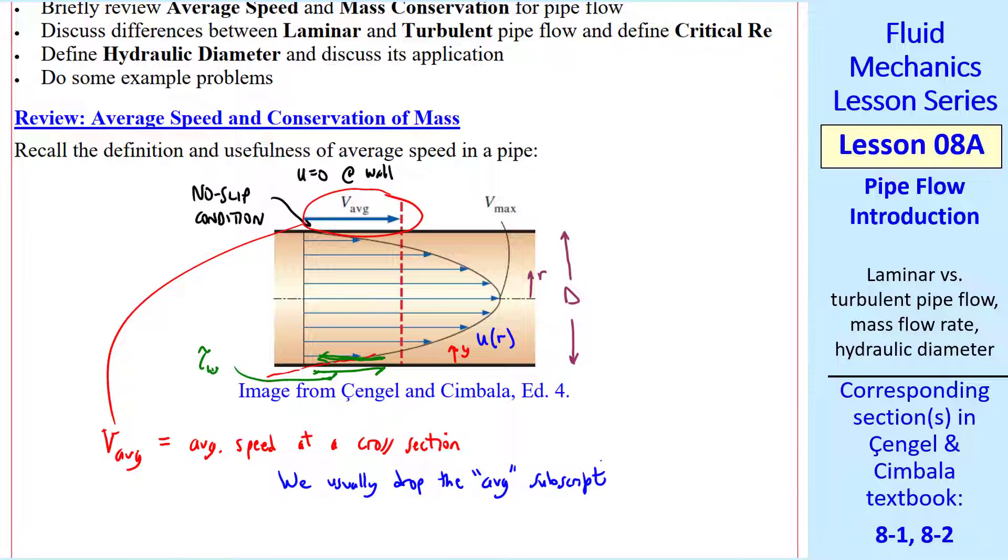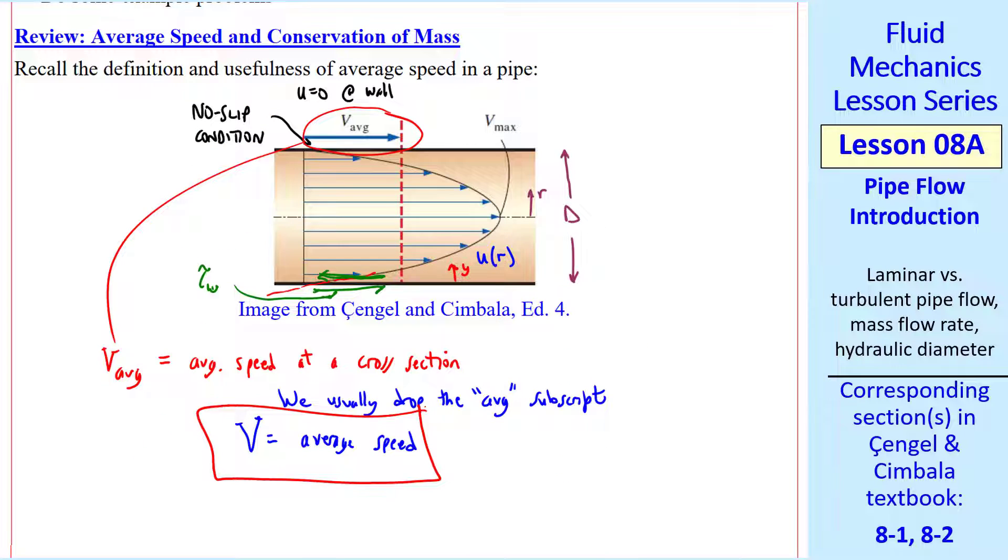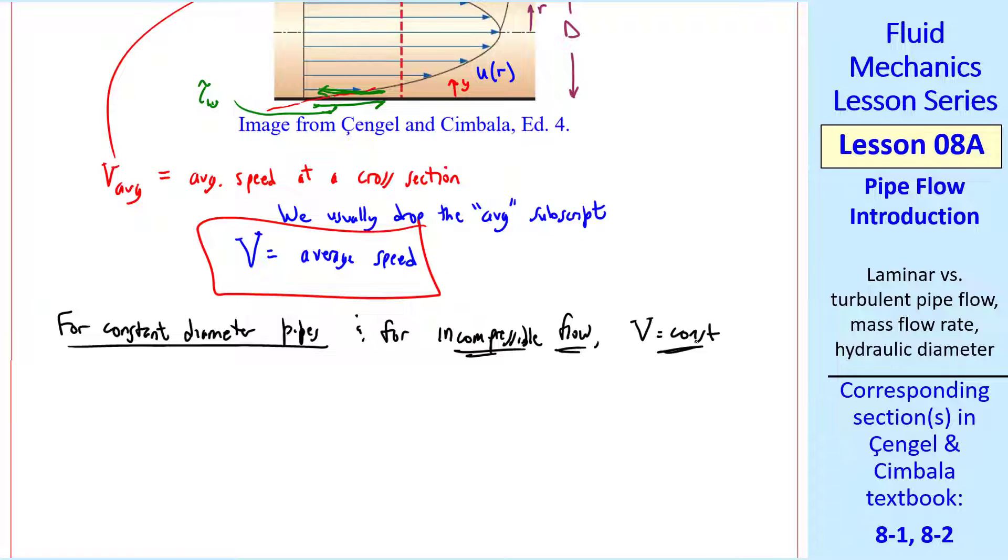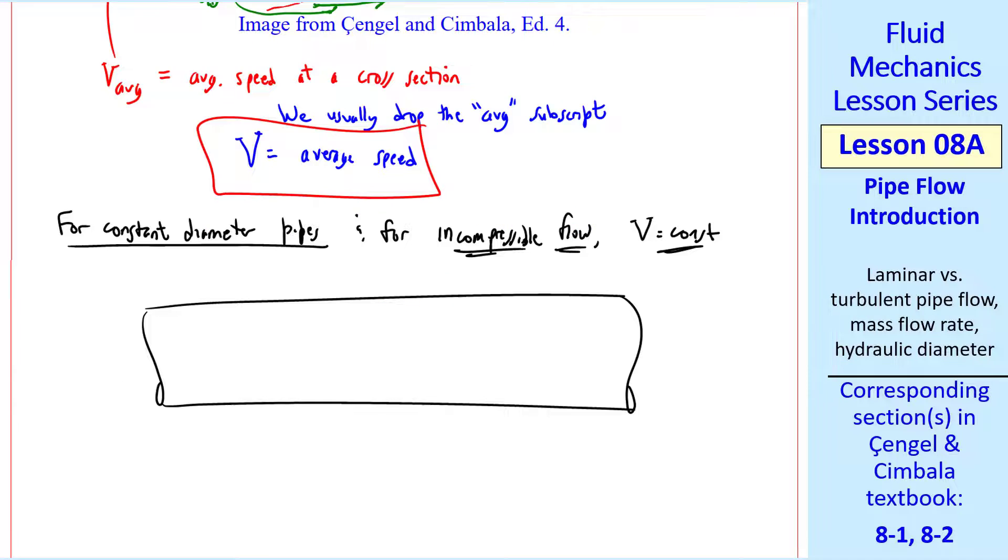V average is the average speed at a cross section. But we usually drop the AVG subscript, so from now on we'll just call V the average speed. For constant diameter pipes, and for incompressible flow, V is a constant down the pipe.